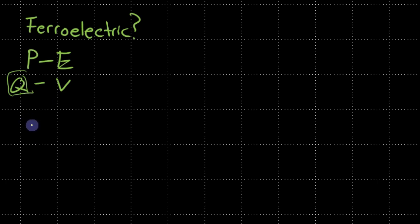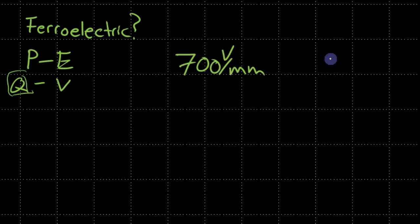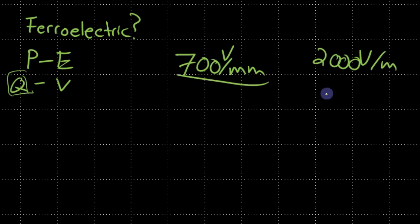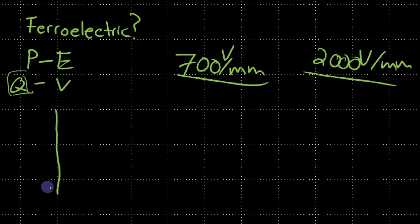You have to apply a large electric field. The coercive field is on the order of 700 volts per millimeter for a soft material, or maybe 2,000 volts per millimeter for a hard material. You'll need a power supply that can provide 700 volts for a 1 mm thick sample, or perhaps 2,000 volts for a hard material. However, if you're using thin films you could use just 1 volt since you don't need as much voltage.